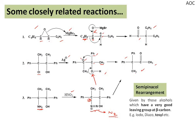Here we use the term semi-pinacol rearrangement. What happens is that if instead of OH you have a good leaving group — for example, aido, diazo, or tosyl — at the beta carbon (the carbon adjacent to the one that will become the ketone is alpha, and the adjacent one is beta), then if there is a good leaving group at the beta carbon it is going to follow the same mechanism as the pinacol pinacolone rearrangement, but the reactant is different from pinacol. So we call it semi-pinacol rearrangement. These three are important examples to keep in mind.